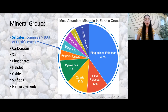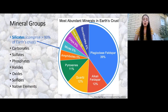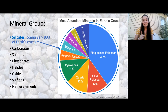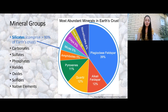Moving on to the relative abundances of minerals in our crust: Earth's crust is made up of over 90% silicate minerals. You can see in this pie chart that everything except the tiny non-silicate slice is silicate minerals. Silicates are clearly important, but what does that mean? Non-silicate mineral groups include carbonates, sulfates, phosphates, halides, oxides, sulfides, and native elements — we'll discuss those right after silicates.